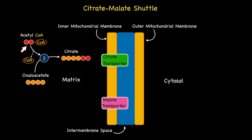The production of citrate allows the two carbons from Acetyl CoA to hitch a ride across and into the cytosol via the citrate transporter. This represents step two of the process.